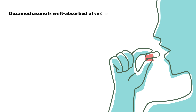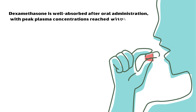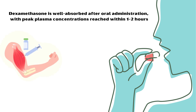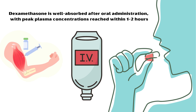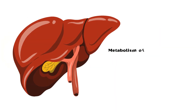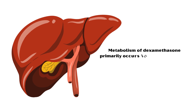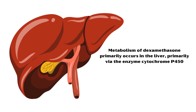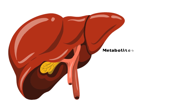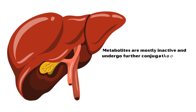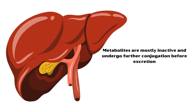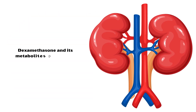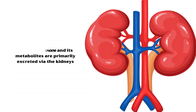Dexamethasone is well absorbed after oral administration, with peak plasma concentrations reached within 1-2 hours. It can also be administered via intramuscular or intravenous routes for rapid onset of action. Metabolism of dexamethasone primarily occurs in the liver via the enzyme cytochrome P450. Metabolites are mostly inactive and undergo further conjugation before excretion. Dexamethasone and its metabolites are primarily excreted via the kidneys.